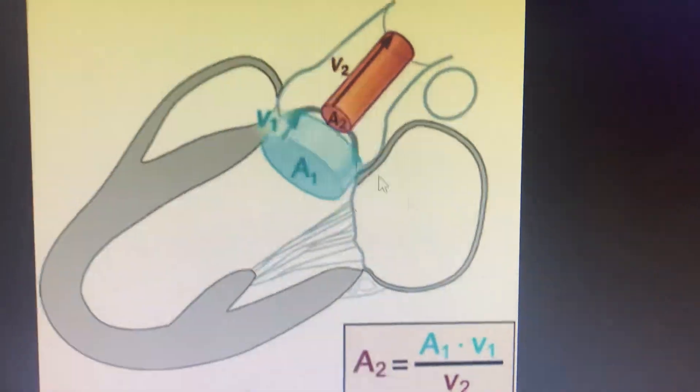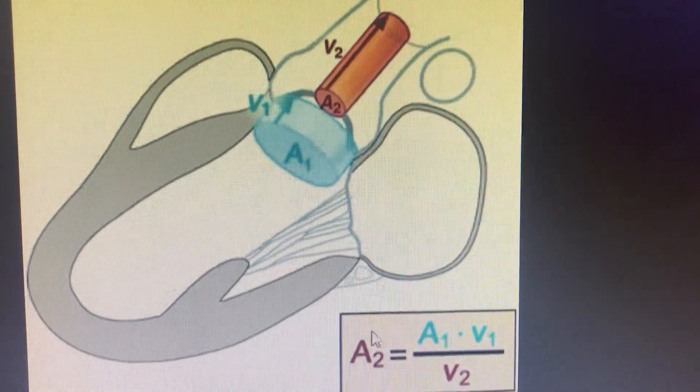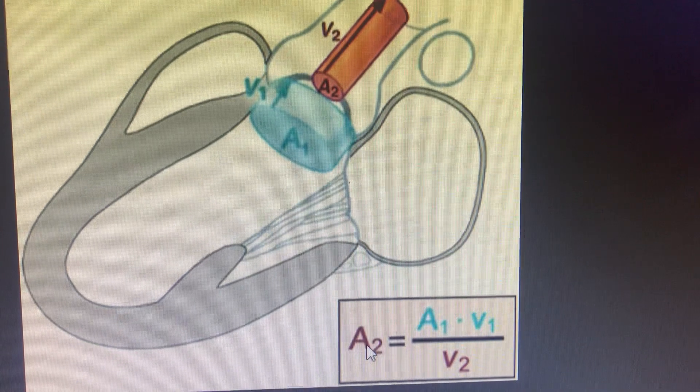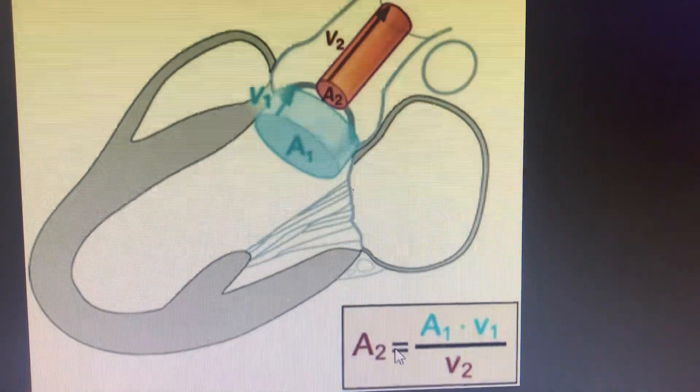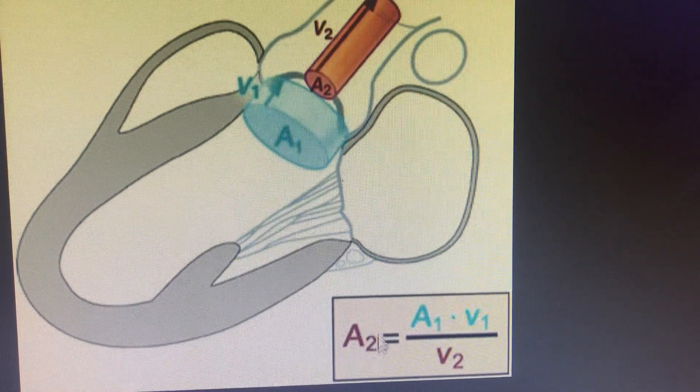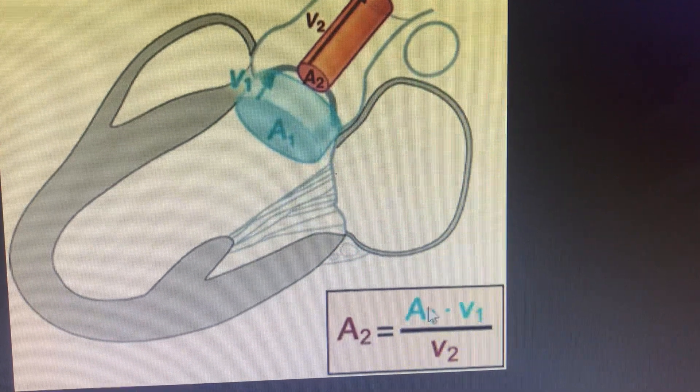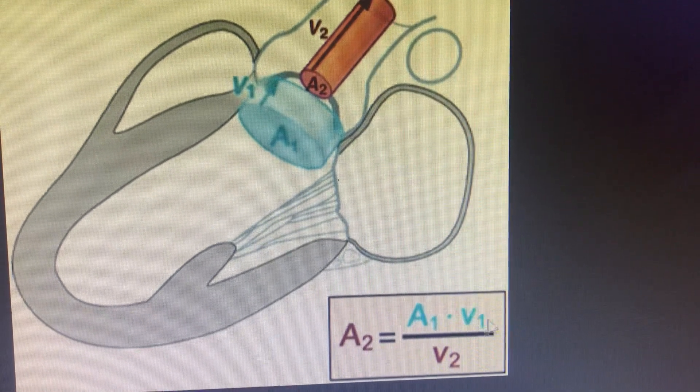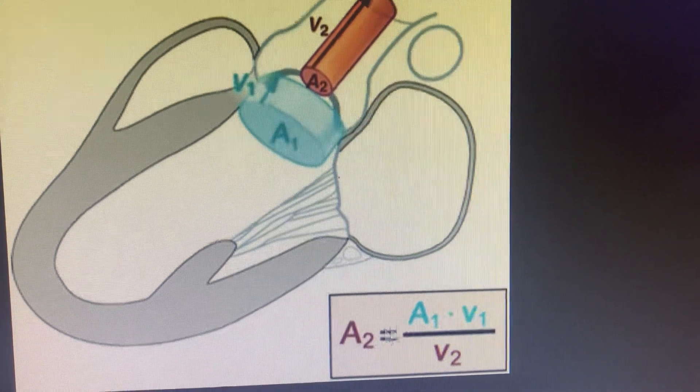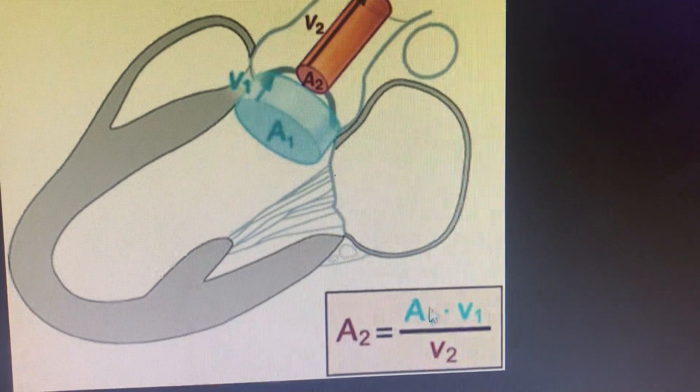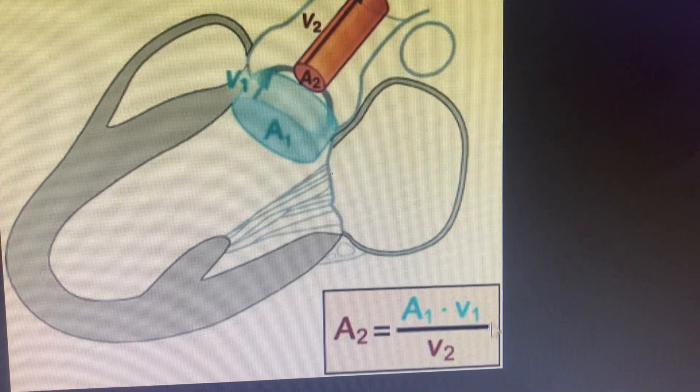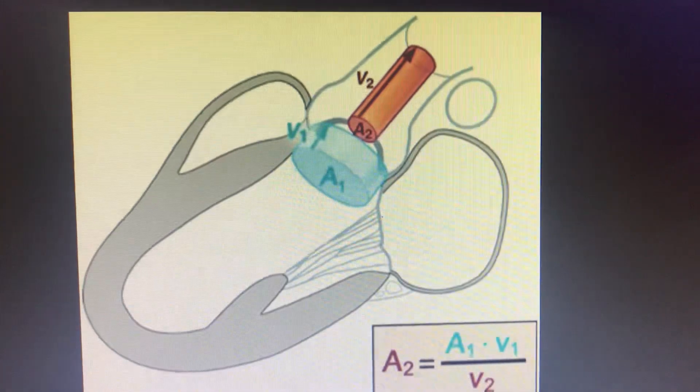Divided by velocity at the aortic stenosis. That is, velocity at the aortic stenosis times area at the aortic stenosis equals area at the LVOT times velocity at the LVOT. So we get V2 down there and make it A2 equals A1 times V1 by V2. That's how we calculate the continuity equation.